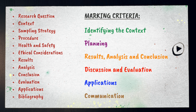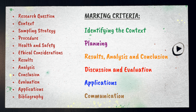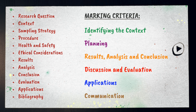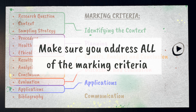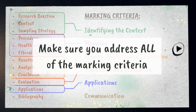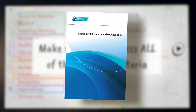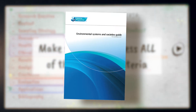If we look at the marking criteria you'll be assessed on, you can see how my list fits with it. In some places the assignment sections have the same or similar titles as the marking criteria. Whatever structure you go with, make sure you address all of the marking criteria. It's there in the subject guide and you should keep it on hand throughout the writing process.